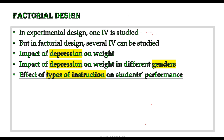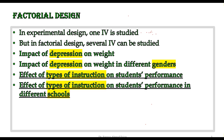Another example: 'effect of type of instruction on student performance' is a simple one-way experimental design topic. The type of instruction is the independent variable and student performance is the dependent variable, since it depends on the type of instruction. There is no other independent variable here.